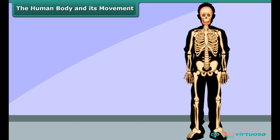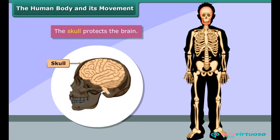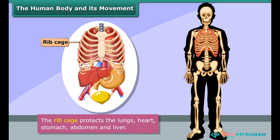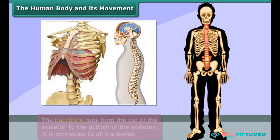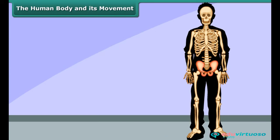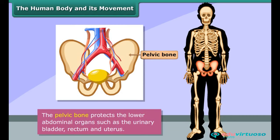Most of the bones protect our organs. The skull protects the brain, while the ribcage protects the lungs, heart, stomach, abdomen, and liver. The backbone runs from the top to the bottom of the skeleton and is connected to all the bones. The pelvic bone protects the lower abdominal organs, such as the urinary bladder, rectum, and uterus.